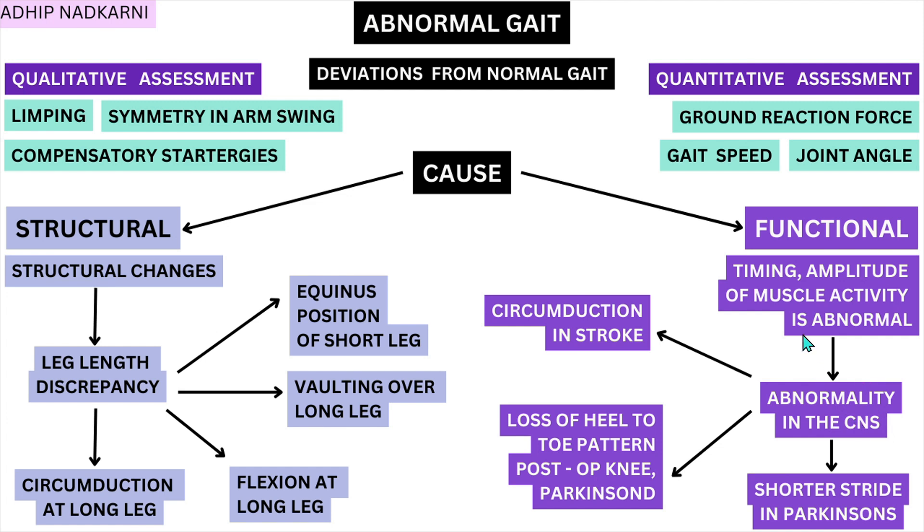Before we look at different examples, I want to establish a few foundational concepts. It is not the case that one condition — say, stroke — always produces one specific gait pattern, or that knee pain always produces a particular gait. It's not that straightforward. Rather, the body has a pain point or limitation, and it finds adaptations — different ways to move forward. Everybody will find different ways to adapt to the same problem.